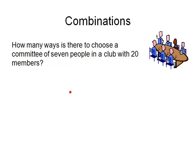How many ways are there to choose a committee of 7 people in a club with 20 members? This is a combination problem because we're choosing a committee. In other words, the order within that committee makes absolutely no difference.